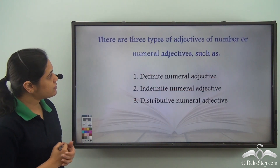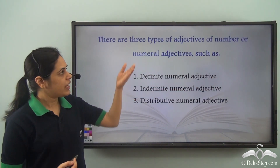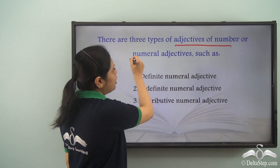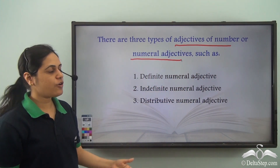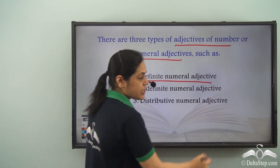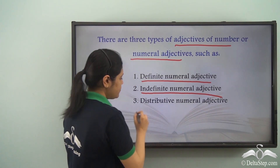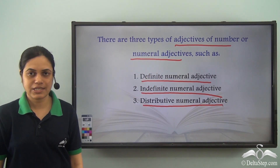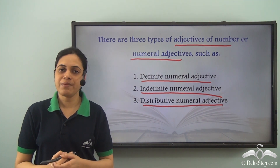Now, adjectives of number are of three types. Adjectives of number are also called numeral adjectives, and they are of three types: definite numeral adjectives, indefinite numeral adjectives, or distributive numeral adjectives. So, let us see each of these one by one.